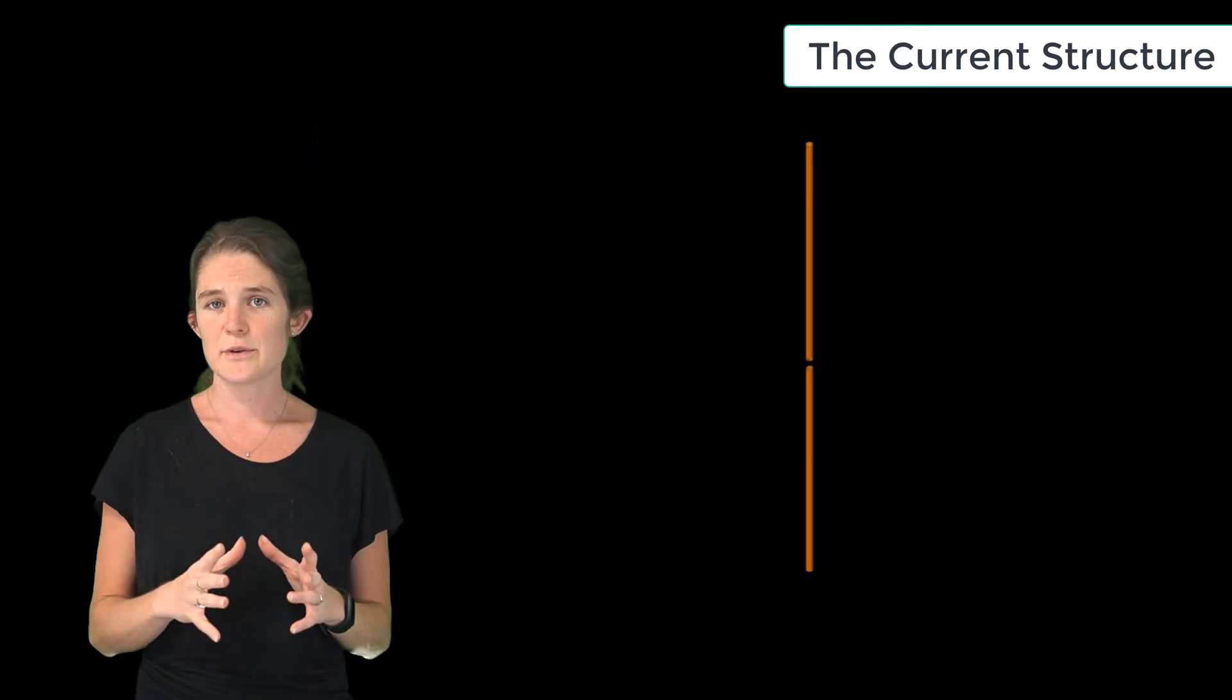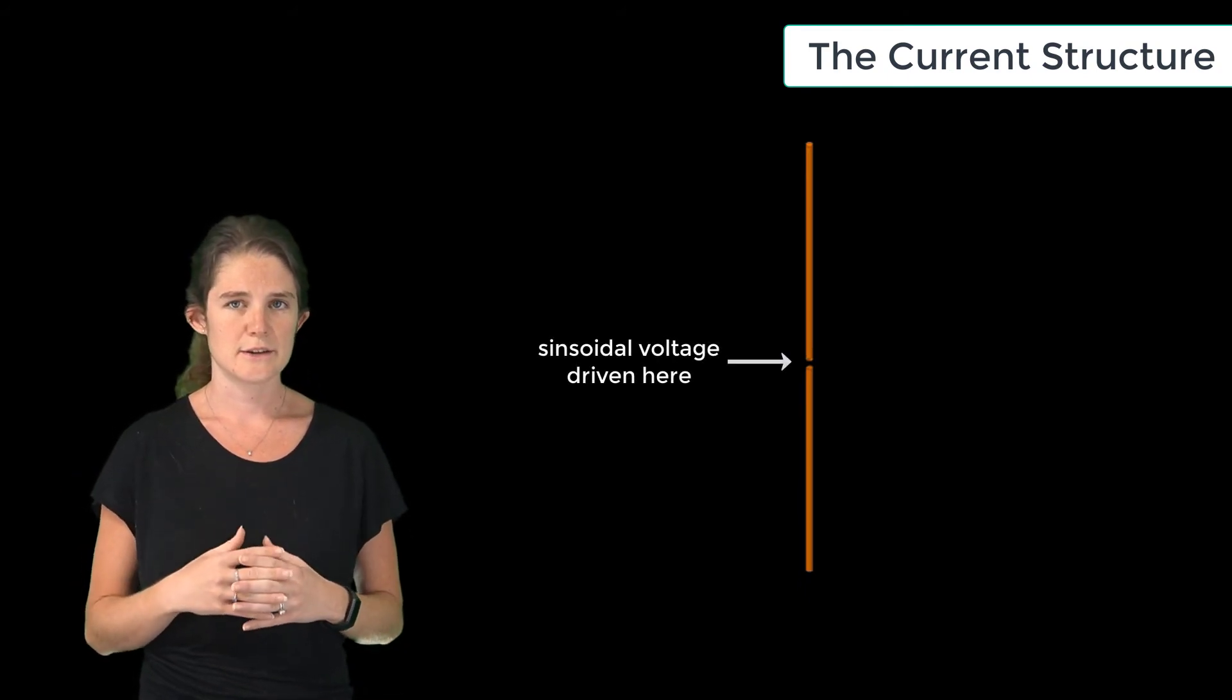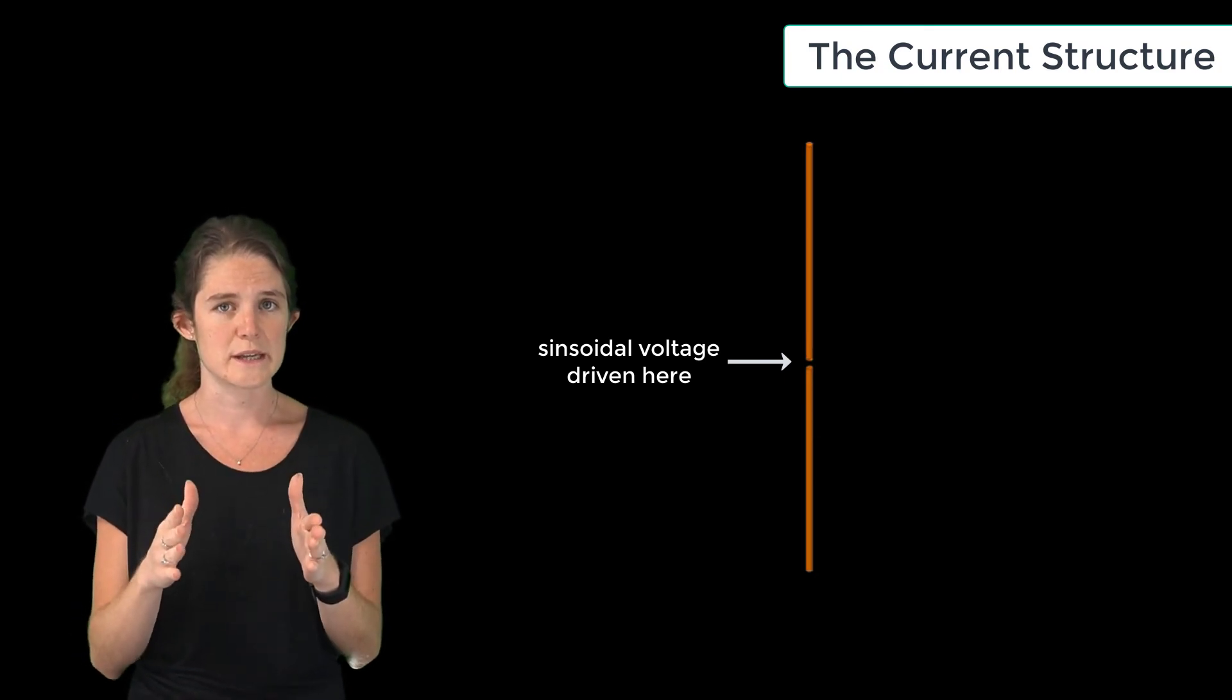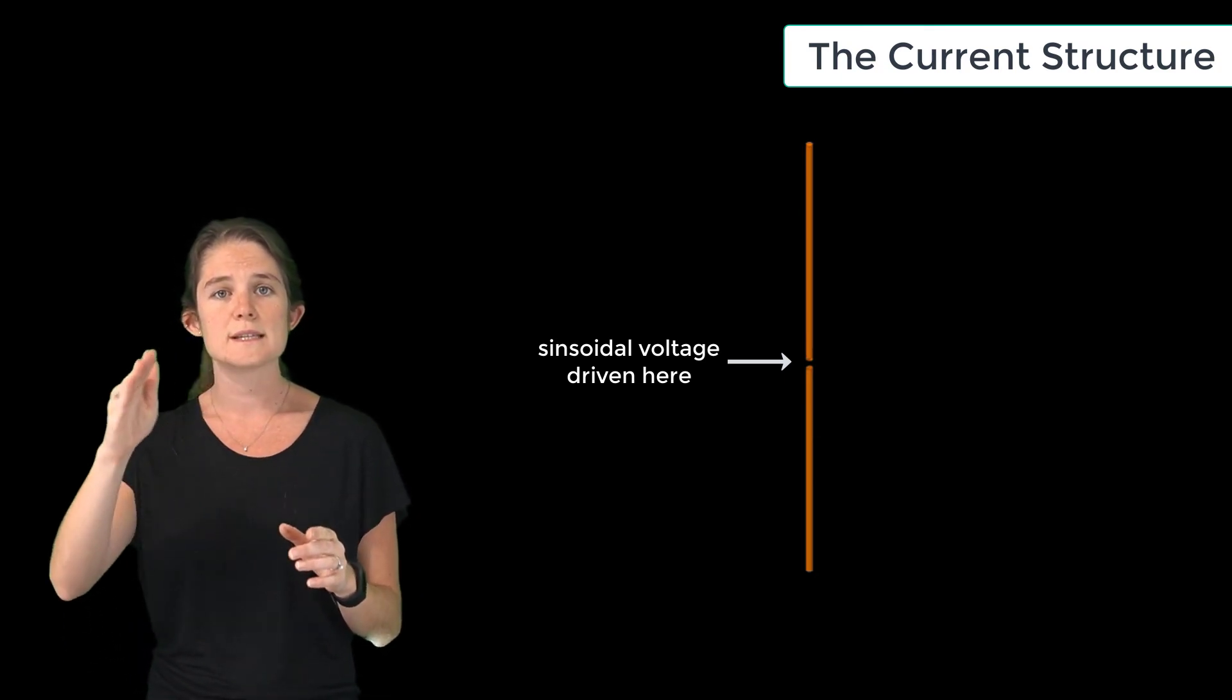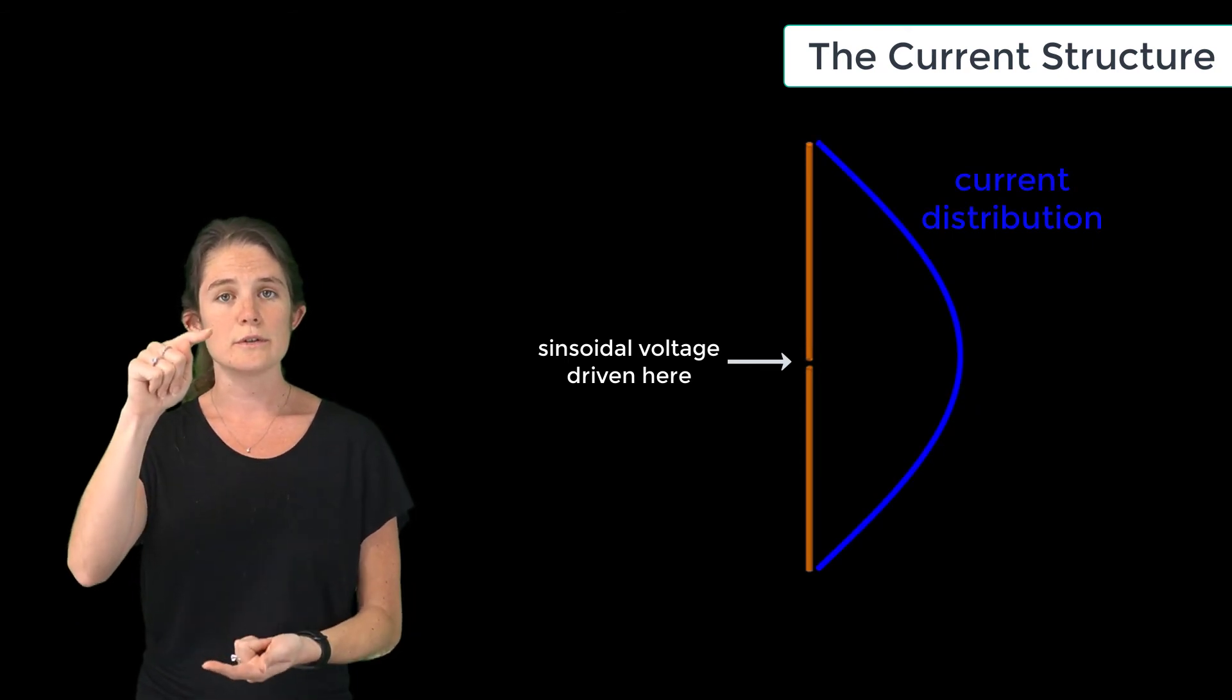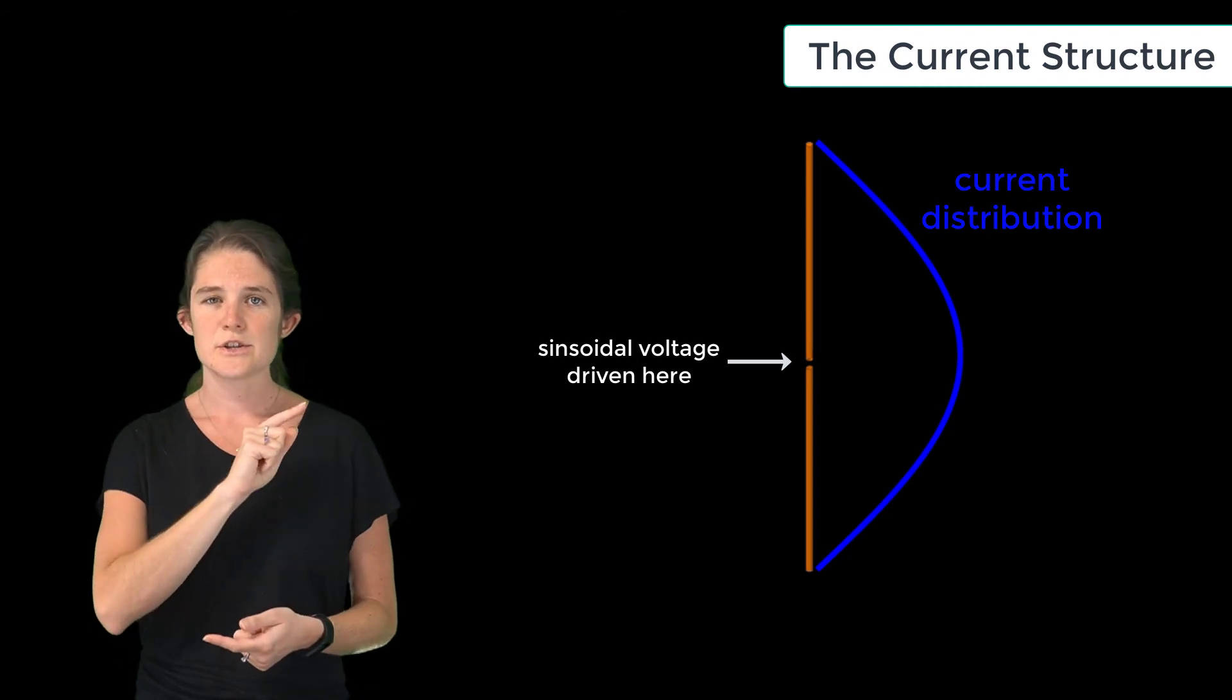The current structure that forms on a half-wave dipole driven by a sinusoidal source is approximately sinusoidal. When the antenna is driven at exactly the half-wave frequency, the current magnitude forms a standing half sinusoid along the length of the dipole with nulls at either end of the dipole and a maximum at the center. So here's an animation of the current density on the surface of a dipole over several cycles.